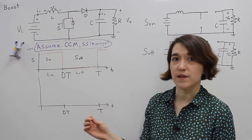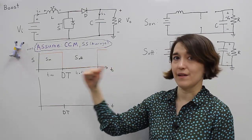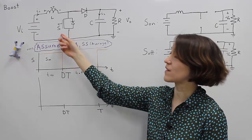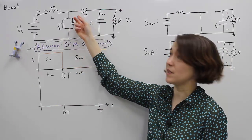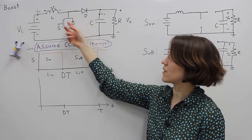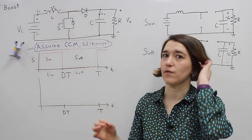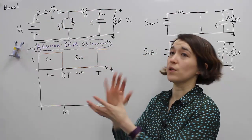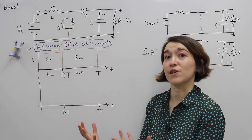Remember in switch mode power supplies we always have an active switch and usually we have a passive switch. Our active switch is now here and our passive switch, the diode, is here and our inductor is now here. So this configuration is slightly different than the buck converter and because we rearrange these switches and inductors we actually get a different function from it.